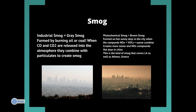Smog is a result of air pollution. Industrial smog, or gray smog, is formed by burning oil or coal — this is the kind of smog you can see in industrial cities like Beijing, China. Brown smog is formed on hot sunny days in the city; this is the kind of smog that covers LA, Athens, Greece, as well as other big cities.